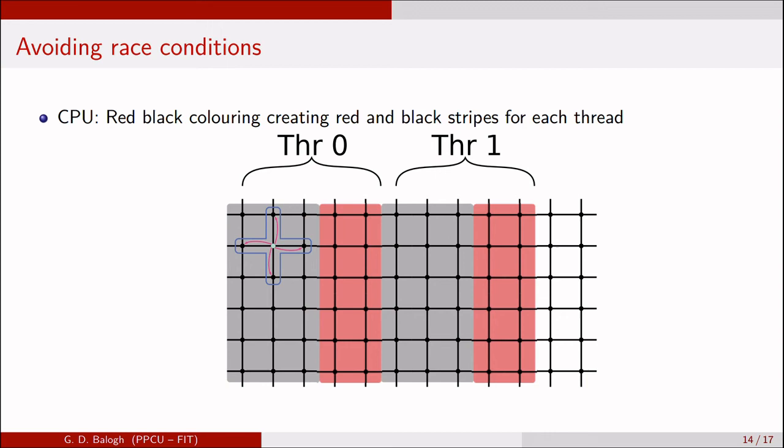We divide the iteration range into domains that will be computed by threads, and inside these domains we use two colors. The first stripes can be run in parallel since the stencils don't overlap. We choose the width of these stripes such that the stencils are not overlapping so they can run in parallel. We have a synchronization point after the first color, and then we can run the second color in parallel.